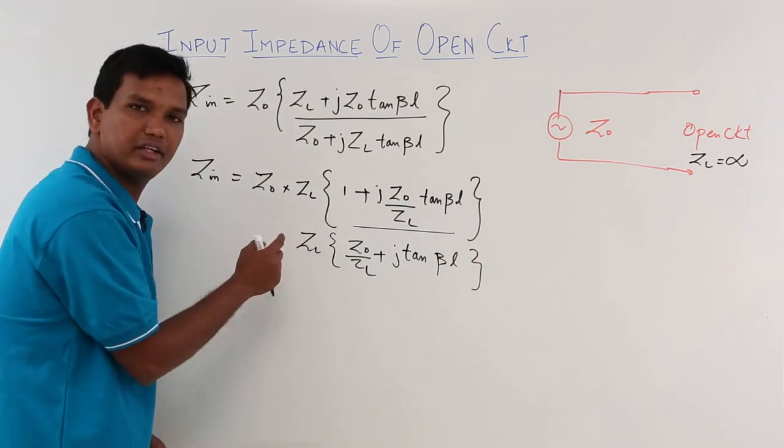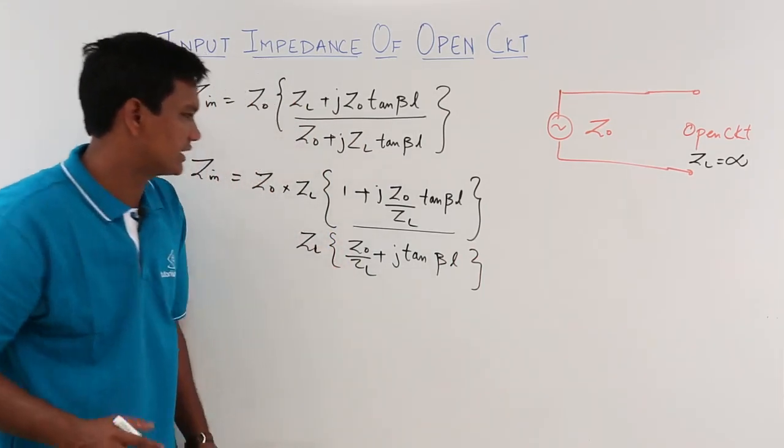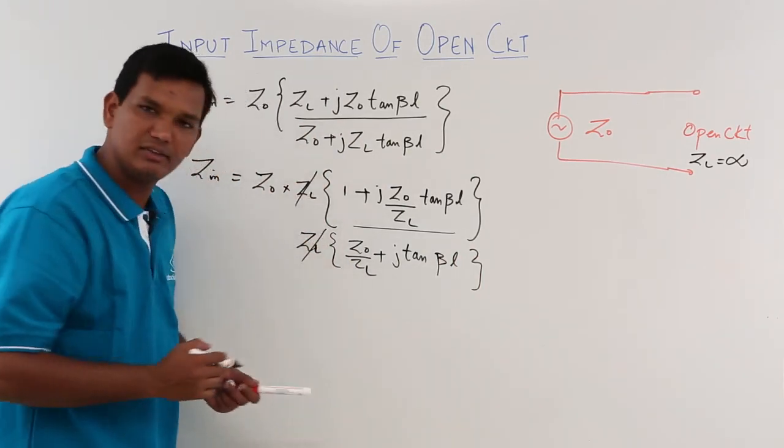This would be my equation. What I have did is nothing but I have taken the Z L common here, both sides. Now, this Z L and this Z L will get cancelled.